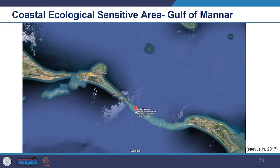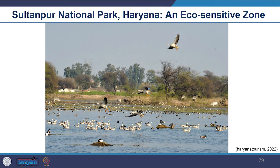A number of countries protect some landscapes by giving them designation — some landscapes are very sensitive and are given designation for their protection, like eco-sensitive areas. In this image you can see the coastal ecological sensitive area of the Gulf of Manar, and the Sultanpur National Park in Haryana identified as an eco-sensitive zone. Unlike air pollution, water pollution, or noise pollution which are very quantifiable, landscape and visual assessment is more qualitative in nature — the techniques and tools differ a lot and there are no standards for these things.